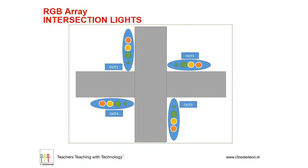The second RGB programming is intersection lights. It's quite handy that the RGB array has 16 lights on it. You can see it in the drawing of the intersection. You have OUT2, which is the four lights at the upper left corner; OUT4 is the four lights at the lower left corner; OUT1 is the four lights at the upper right corner; and OUT3 is the four lights at the lower right corner. That's also the arrangement on the RGB array. In this programming I don't use the arrows.